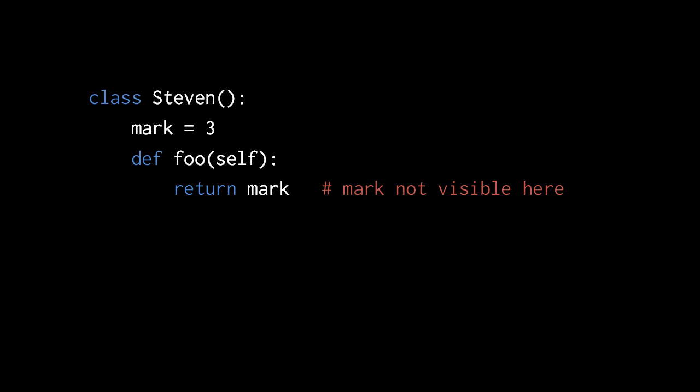A class can be nested inside a function, inside another class, or have other classes and functions nested within it. The odd thing with classes is that any scope nested within a class cannot see the scope of the class itself. For example, in the class Stephen we declare a function foo, and inside that function we can't directly refer to anything in the scope of the enclosing class. So when we return mark — presumably meant to refer to mark assigned in the Stephen class — this doesn't work because mark of the Stephen class is not visible. The workaround is to refer to mark indirectly via the class object itself, since Stephen is assigned in some enclosing scope the function can see, so Stephen.mark will work.